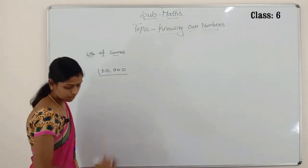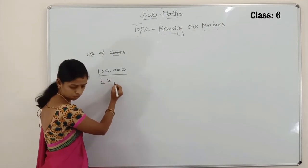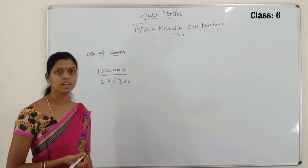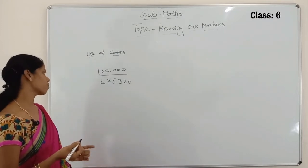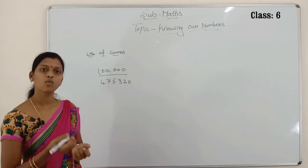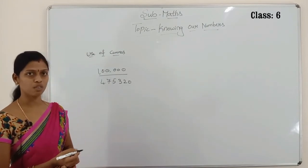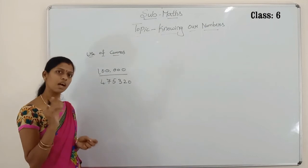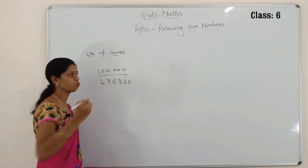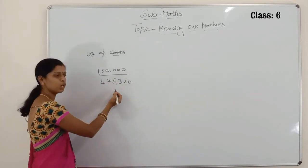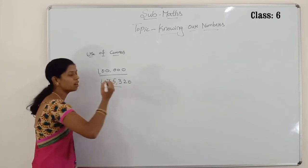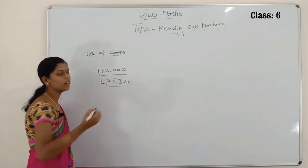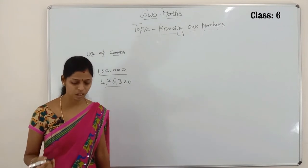See — how will you read this number? You can't read without commas. You might just say four, seven, five, three, two, zero. But when you put the commas, you know the place values. First comma from the right after three digits — one, two, three — put a comma. Then after two digits — one, two — put a comma. Now you can read: four lakhs, seventy-five thousand, three hundred and twenty. You can read easily when you put the commas.